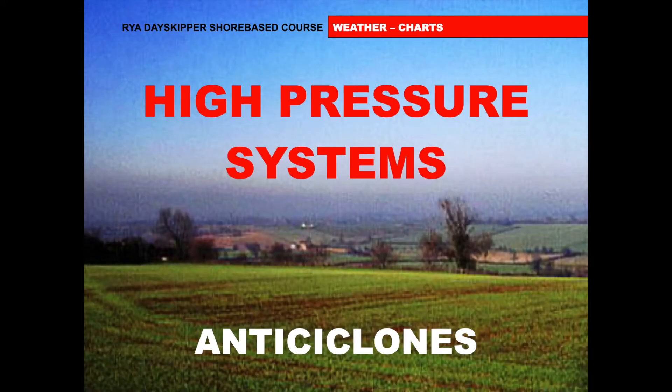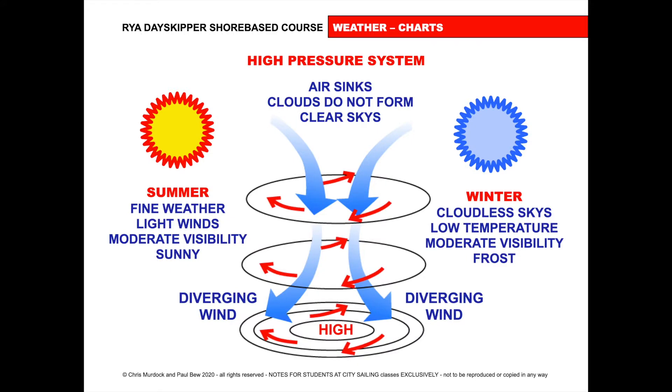Where we are, we'd expect either high pressure systems or low pressure systems, and that depends on where the jet streams are. During the summer we expect more high pressure systems, and in winter more low pressure systems. Let's look at high pressure systems, sometimes known as anti-cyclones. In a high pressure system we experience high pressure on the ground, produced by the air sinking.